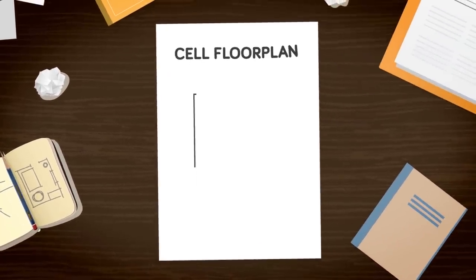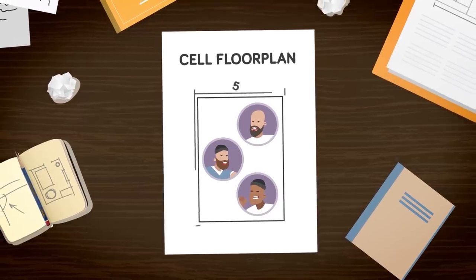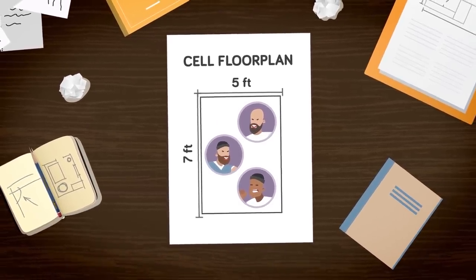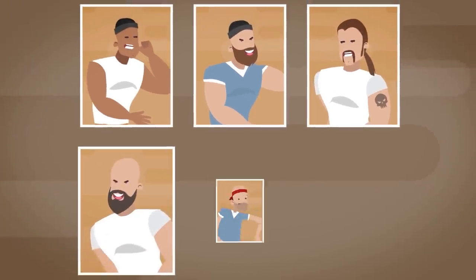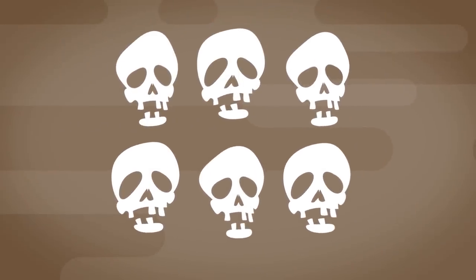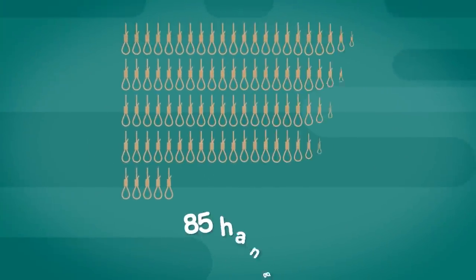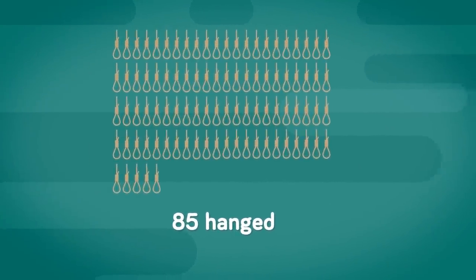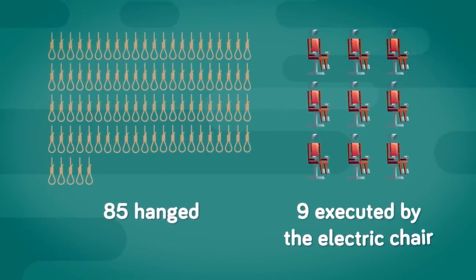The prison was extremely overcrowded, often forcing three violent grown men to share a single 5 foot by 7 foot cell. The inmates of Virginia State Penitentiary were the worst of the worst, and many of them lost their lives behind the chilling stone walls. Ninety-four men were executed on the site, 85 of them were hanged, and a further nine were executed by the electric chair.